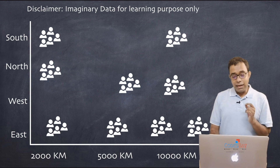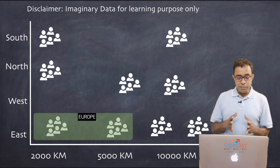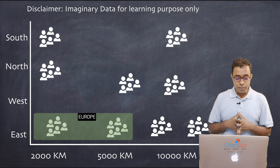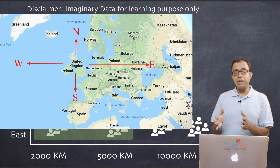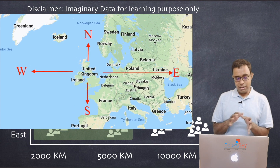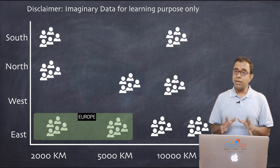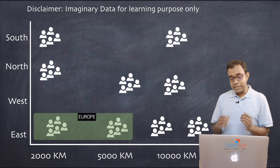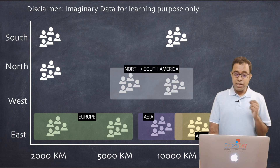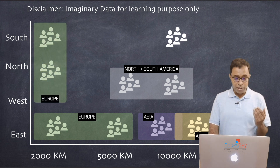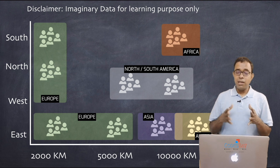We can classify people based on their continents. People from 2000 to 5000 kilometers on the east side are coming from Europe — east meaning the right side on a map. Beyond that is Asia, and further beyond is Australia. On the west side it will be either North America or South America. In the north and south within 2000 kilometers it is still Europe, and in the south ranging from 8,000 to 10,000 kilometers it is Africa. Note that this is totally imaginary data for learning purposes only.